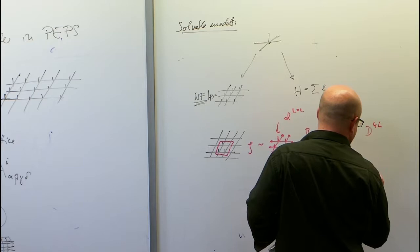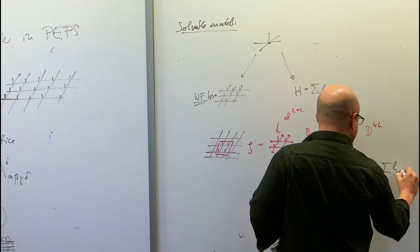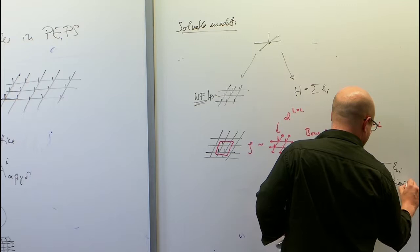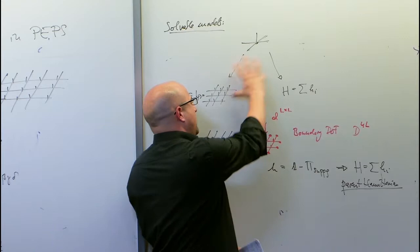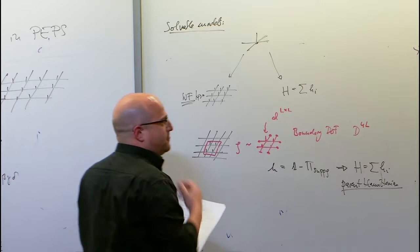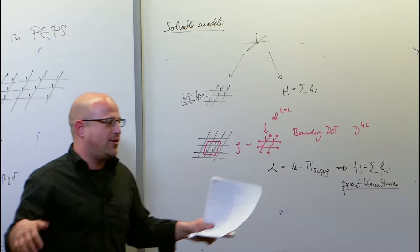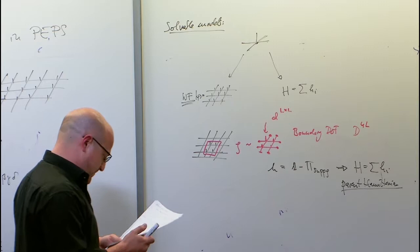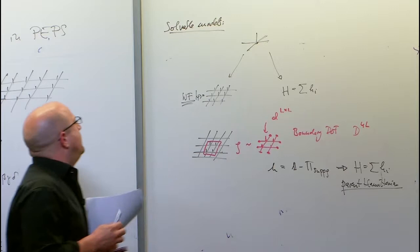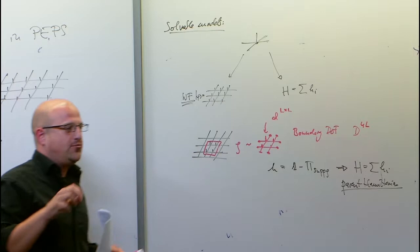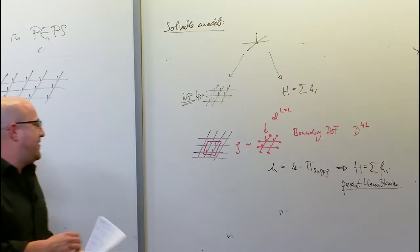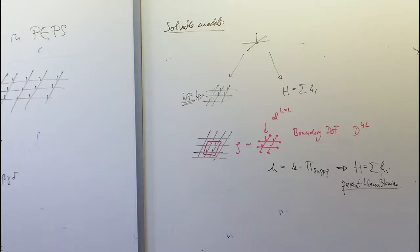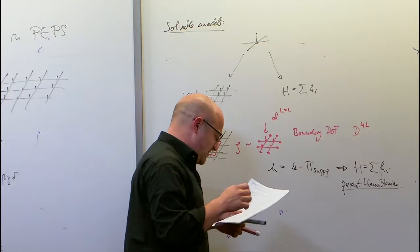A relevant question is under which conditions will such models have unique ground states or ground states with a controlled degeneracy. Otherwise this framework would be pretty useless if the Hamiltonian has a huge uncontrolled ground space degeneracy. In this talk, I want to highlight which properties the tensor needs to have in order to obtain systems with topological order — ground state degeneracy depending on the topology of the manifold.